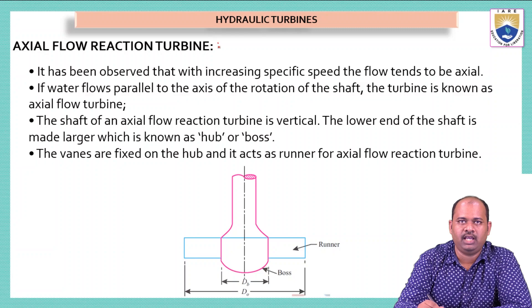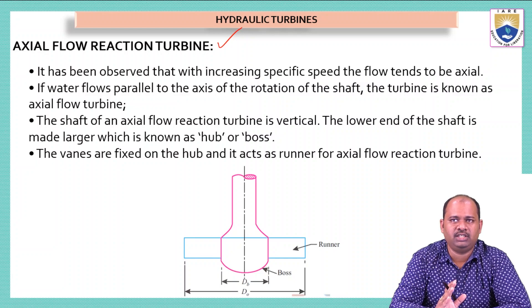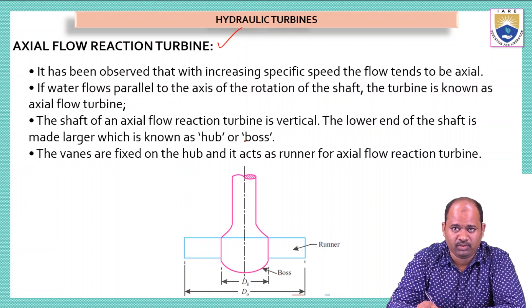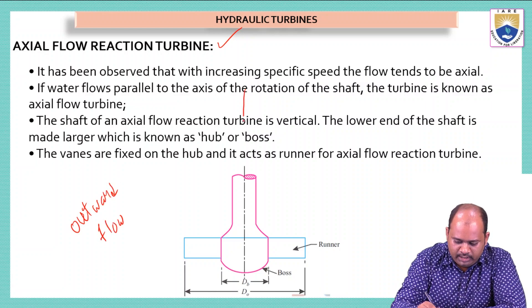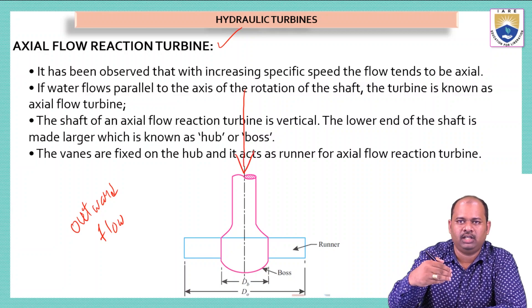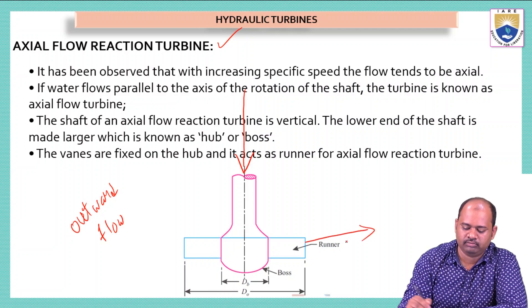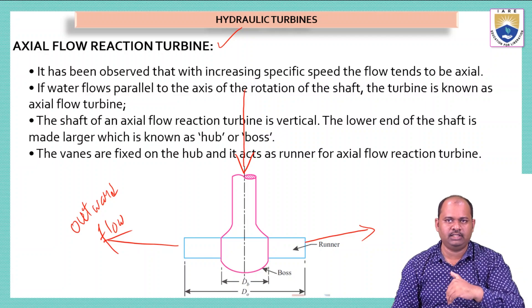Another type of turbine is the axial flow turbine. It has been observed that with increasing specific speed the flow tends to be axial. If water flows parallel to the axis of rotation of the shaft, the turbine is known as an axial flow turbine. In the outward radial flow turbine, water enters at the center and comes out in the radial direction. This is also called axial flow turbine because water flows along the axial direction of runner rotation.